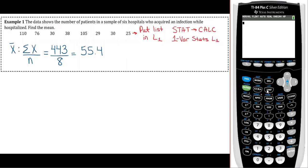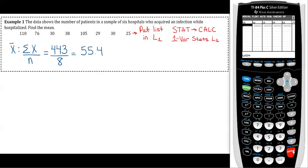Example one, this was the one where we found the mean, we did it by hand, but if you have a long data set it's probably better to just do it in the calculator. In your calculator you're going to go to stat and then edit and then go ahead and put those numbers into L1. So 110, 76, 30, 38, 105, 29, 30, and 25.